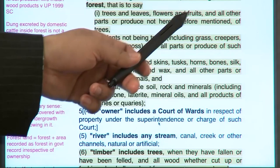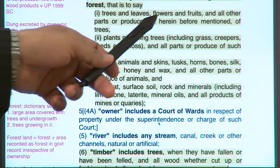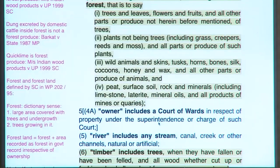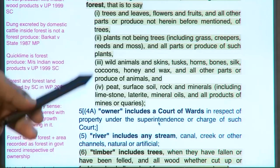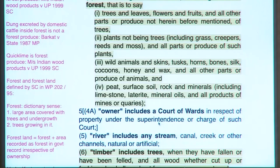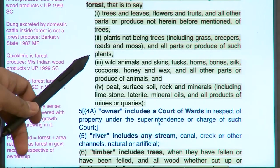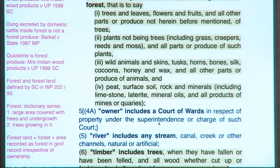A second category applies only when found in a forest or brought from a forest. This list contains trees and leaves, flowers and fruits and all other parts of trees, plants including grasses, creepers, roots, reeds and moss, wild animals and skins, tusks, horn, bones, silk cocoon, honey, wax, peat, surface soil, rocks, minerals, and so on. These are forest produce only when found in the forest or brought from the forest.